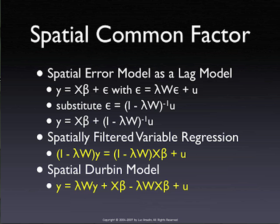One is the spatial common factor specification, which shows you how you can express a spatial error model as a spatial lag model with particular constraints on the parameters. The other two are what we call higher order models, where you combine a lag dependent variable with spatial error autocorrelation in the error term. Each of these has implications for identification and particular parameter constraints. Then in the second part of this afternoon, I want to briefly comment on spatial externalities before we move on to the lab.